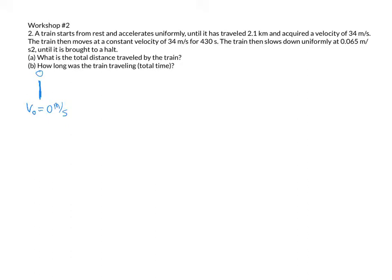And it travels for a distance of 2.1 kilometers and acquires a velocity of 34 meters per second. So it goes for some distance which we know. If we call our initial position zero, that's a variable not given to us, but we can assume it because we know the distance we're told is from the start. So we have the zero point, point one.